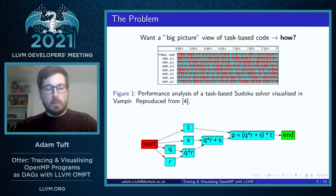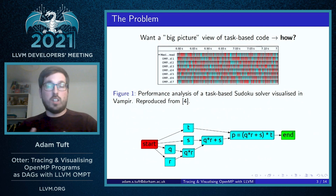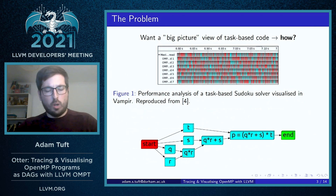Because of the additional concurrency that adding tasks to your code gives you, task-based code is useful for capturing irregular or nested parallelism, but that additional concurrency adds a layer of complexity to the code as well.